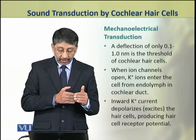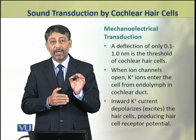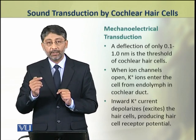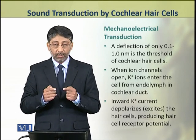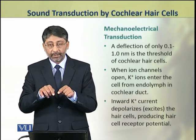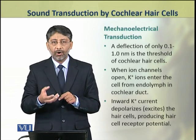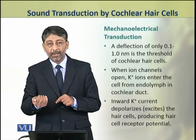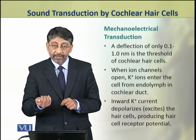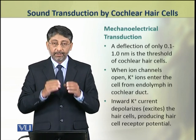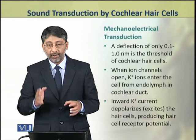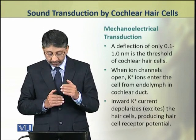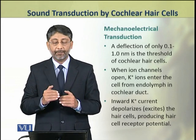When ion channels open, potassium ions enter the cell from the endolymph present in the cochlear duct. The potassium ions enter the hair cells and this inward potassium current depolarizes — that is, excites — the hair cells and produces the hair cell receptor potential.